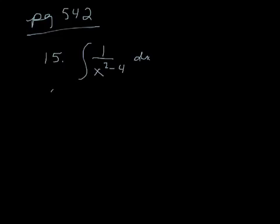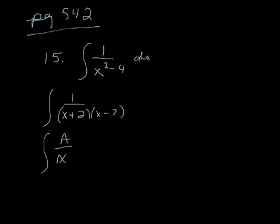So I have to factor what's on bottom. That gives me x plus 2, x minus 2. Separate that into two factors: A over x plus 2, B over x minus 2.